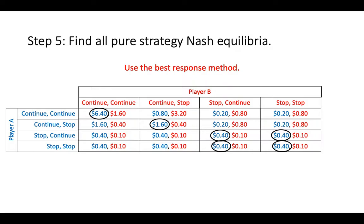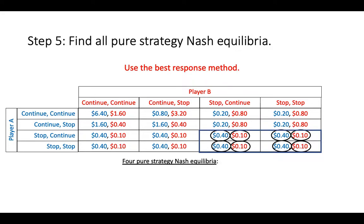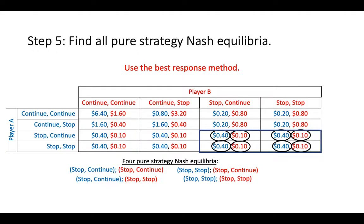We will use the same method to find Player B's best responses to each of Player A's possible strategies. If Player A chooses to always continue, Player B's best response is to continue then stop. If Player A chooses to continue then stop, then Player B's best response is to stop on their first move. If Player A chooses to stop on their first move, then Player B never gets to play the game, so any of their possible strategies are a best response. Therefore, we have found four pure strategy Nash equilibria to this game: both players playing stop-continue, one player playing stop-stop and the other playing stop-continue, and both players playing stop-stop.